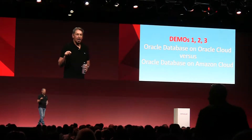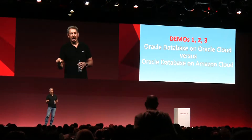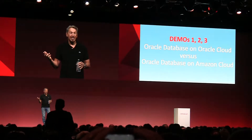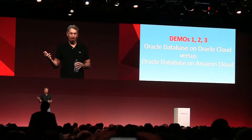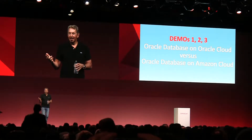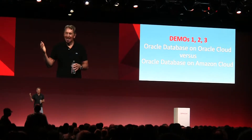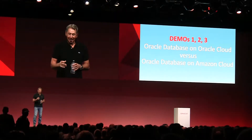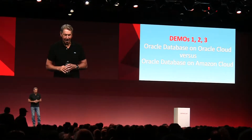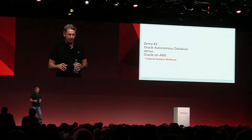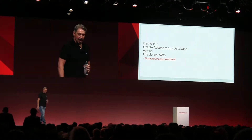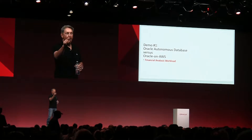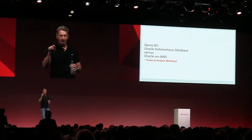I'm only going to run demo 6A and 6B because the Amazon side of the demo takes too long. It's true, and you'll see it — it's really kind of funny. Next slide. Demo number one: this is a financial analysis workload. Oracle on Oracle versus Oracle on Amazon.